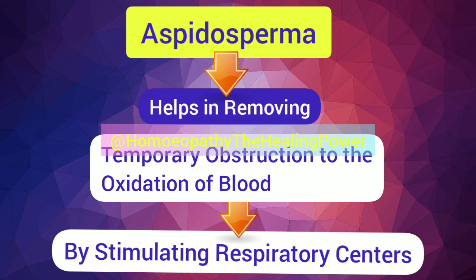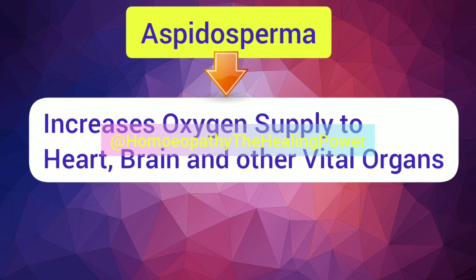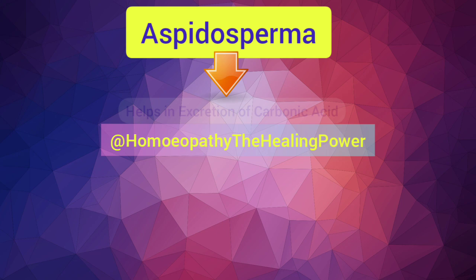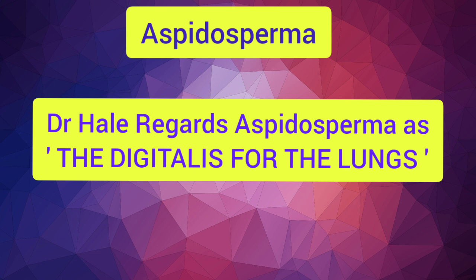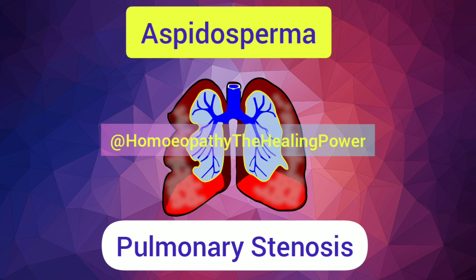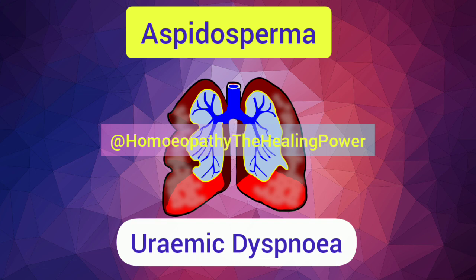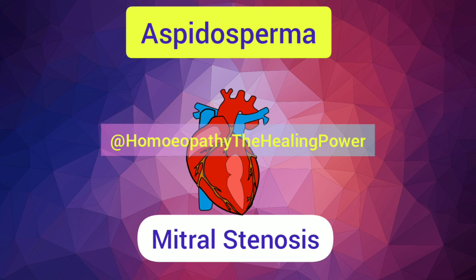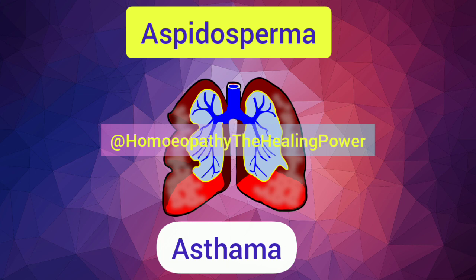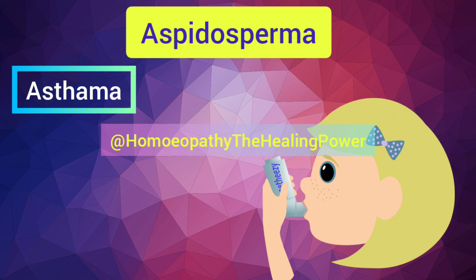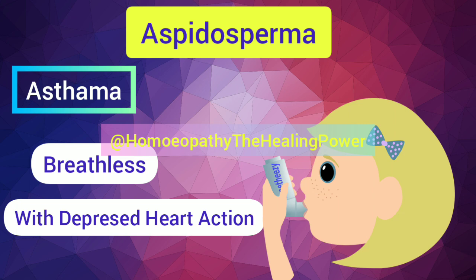Aspidosperma helps remove the temporary obstruction to the oxidation of blood by stimulating the respiratory centers, increasing oxygen supply to the heart, brain, and other vital organs, and aiding in the excretion of carbonic acid. Dr. Hale, the prover, called Aspidosperma 'the digitalis for the lungs.' It is useful in pulmonary stenosis, thrombosis of the pulmonary artery, uremic dyspnea, cardiac asthma, mitral stenosis, fatty condition of the heart, bronchitis, and simple asthma — particularly when there is depression of heart action.